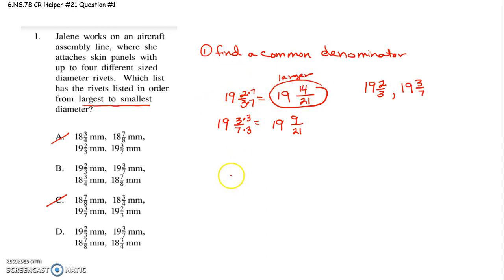Now let's go ahead and check out those 18s. We have 18 and three-fourths and 18 and seven-eighths. So let's find a common denominator. The common denominator here would be an 8. You can multiply 8 times 4 and get 32, but I can already see that 8 will be a common denominator.